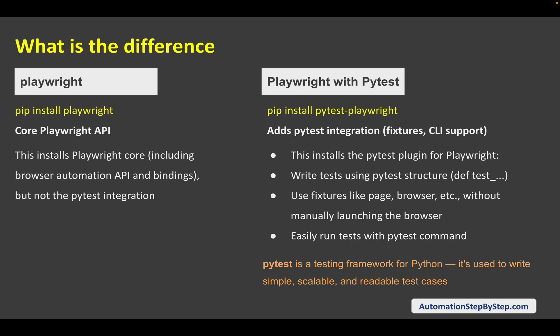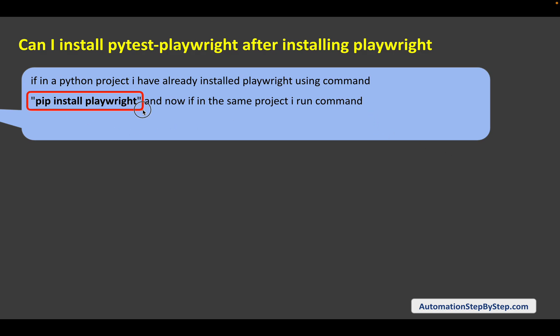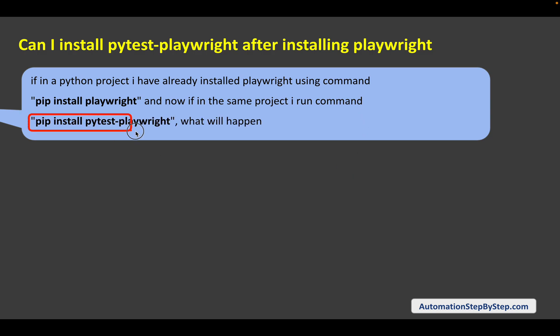Now, a common question: if in a Python project you've already installed Playwright using `pip install playwright`, and then you run `pip install pytest-playwright` in the same project, what will happen? Do you have to create a separate project, or can you use the same one? Do you have to uninstall Playwright first?